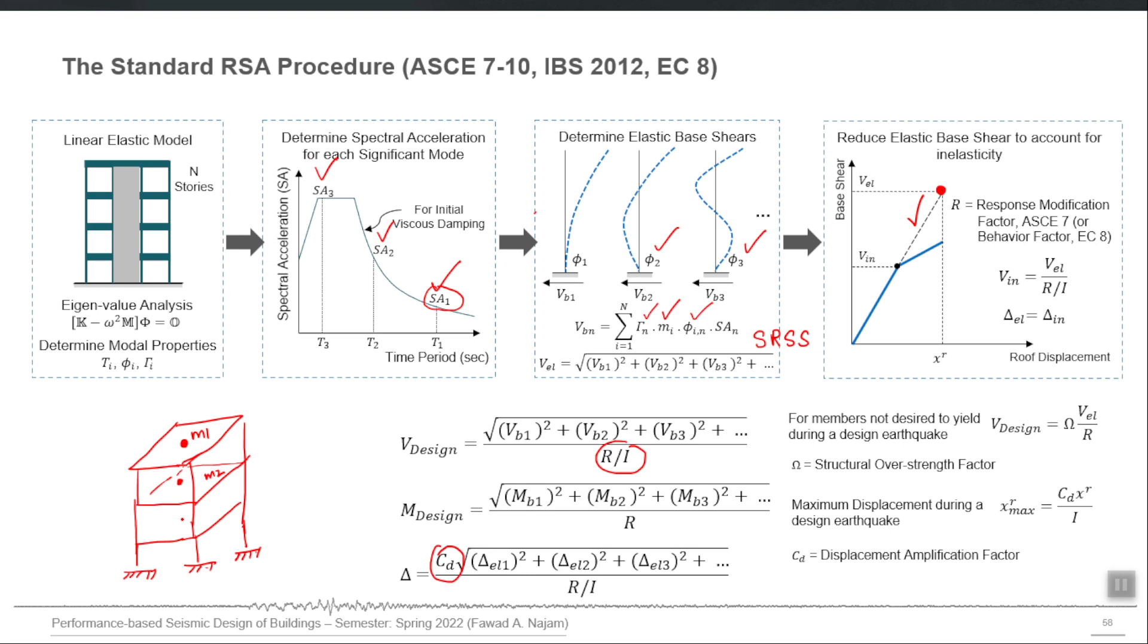So if you use the rigid diaphragm option or rigid diaphragm constraint, the program is going to constrain all those nodes at that particular level. The program is going to connect them with a rigid link, and that rigid link is between all those nodes at that level and the master node which it creates at the center of mass.